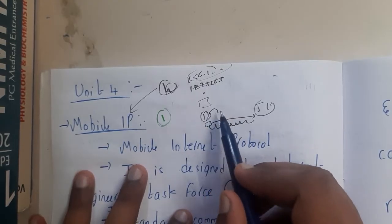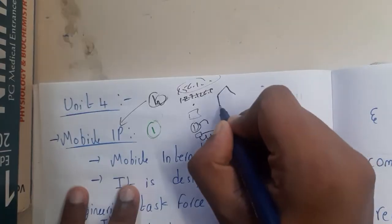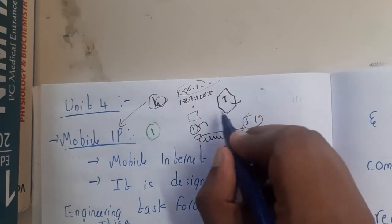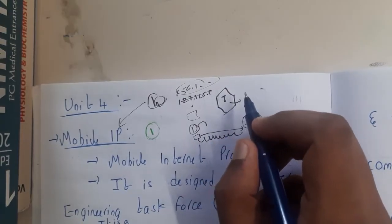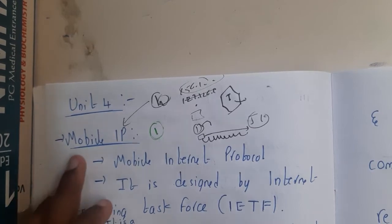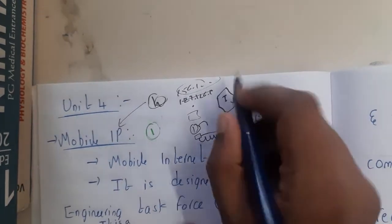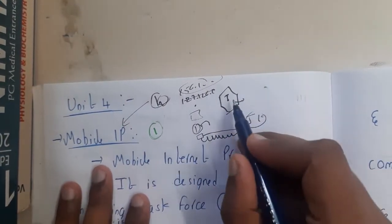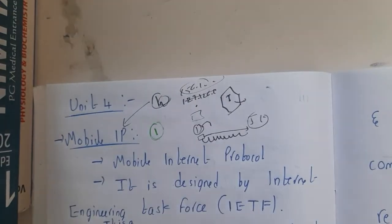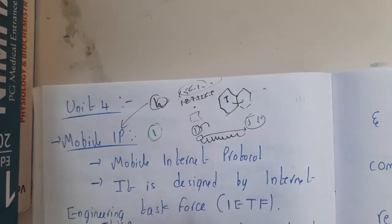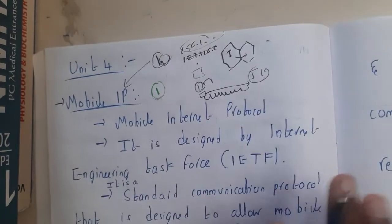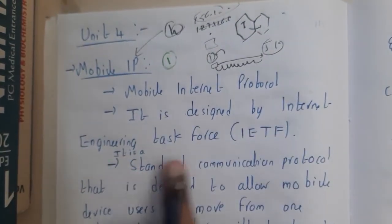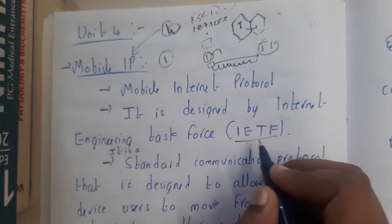You might think that whenever you move into a new cell — each cell having its base station — your IP might change as you move from one base station to another. But that is not true. With the concept of Mobile IP, the IP is kept constant and you just change the connection between base stations. The IP is kept constant because if it changes, your connection will be lost for some seconds or minutes.